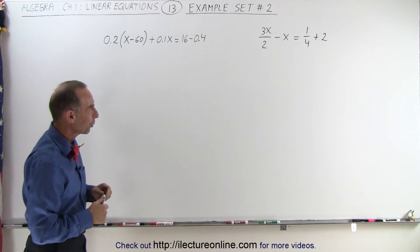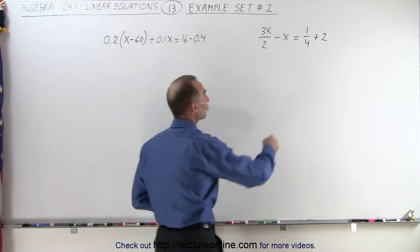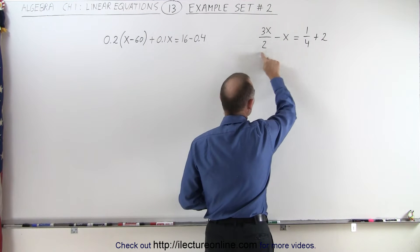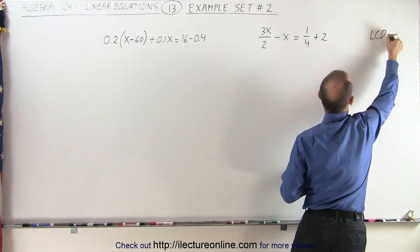Let's take a look at the one on the right. We have fractions, we want to get rid of those fractions. Notice that the largest denominator is the common denominator of the two fractions here, which means the LCD is equal to 4.